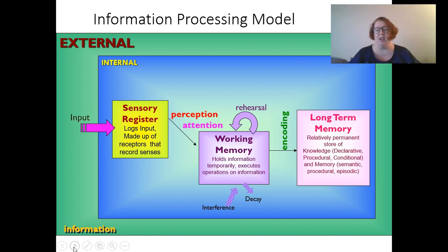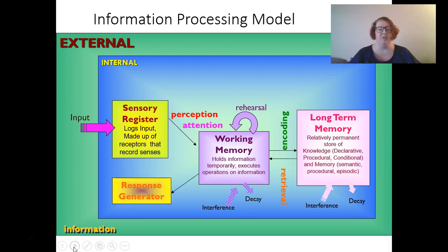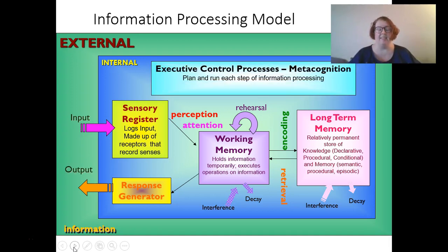Long-term memory holds knowledge — procedural, declarative, and conditional — and memory types including semantic, procedural, and episodic. There's also interference and decay in long-term memory: if we don't use it, we lose it. If we want to get something back out of long-term memory, we retrieve it back to our working memory, which leads to a response generator like our mouth speaking. All of this is guided by our executive control processes — metacognition — that plan and run each step of information processing. When we have disorders of executive control, like ADHD or autism, we see dysfunctions in this whole process.